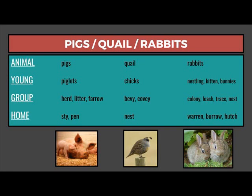As to rabbits, the young are nestlings, kittens, or bunnies. A group would be a colony, leash, trace, or nest. The home of a rabbit would be a warren, a burrow, or a hutch.